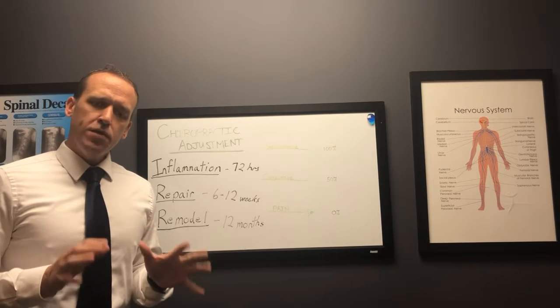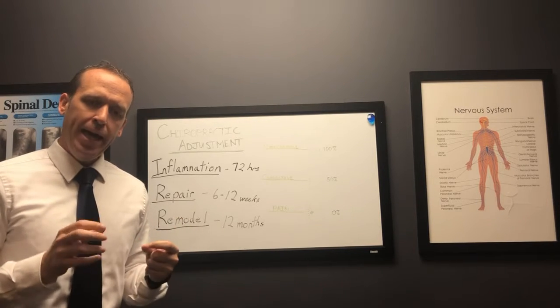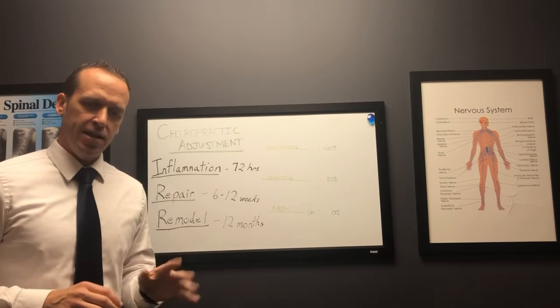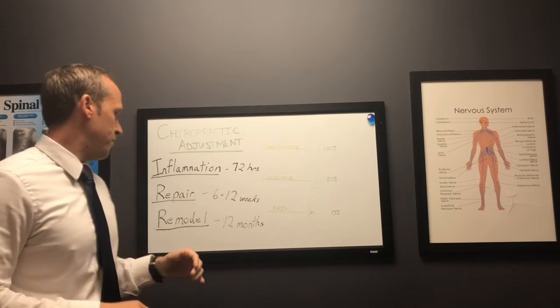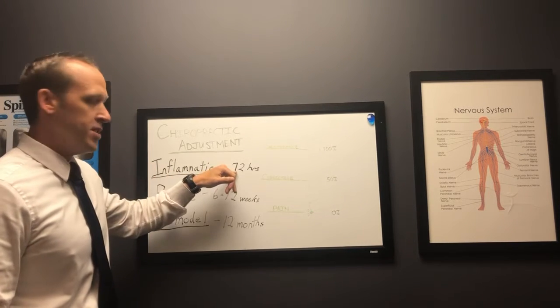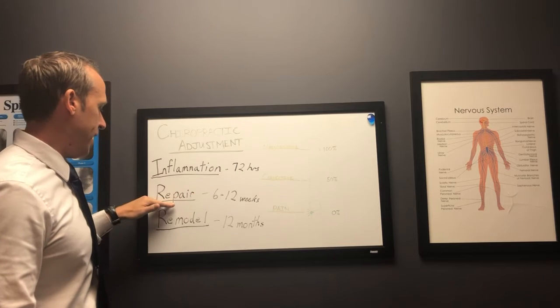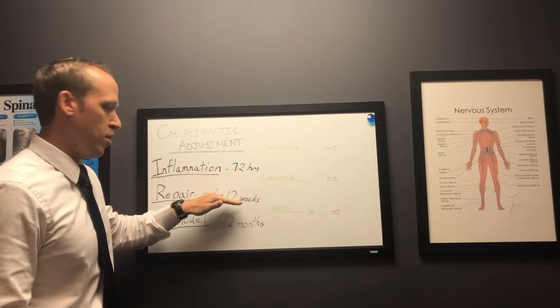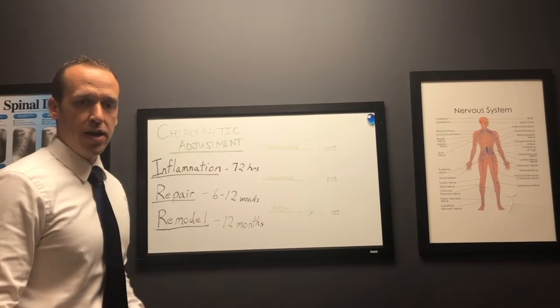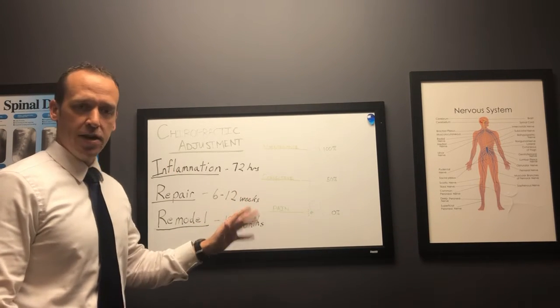Whenever you have an injury or pain to a joint in the body, it goes through three phases of healing. You've got the inflammation stage which takes about 72 hours, the repair stage which can last from 6 to 12 weeks, and then the remodel phase which can last up to 12 months. That stays consistent.